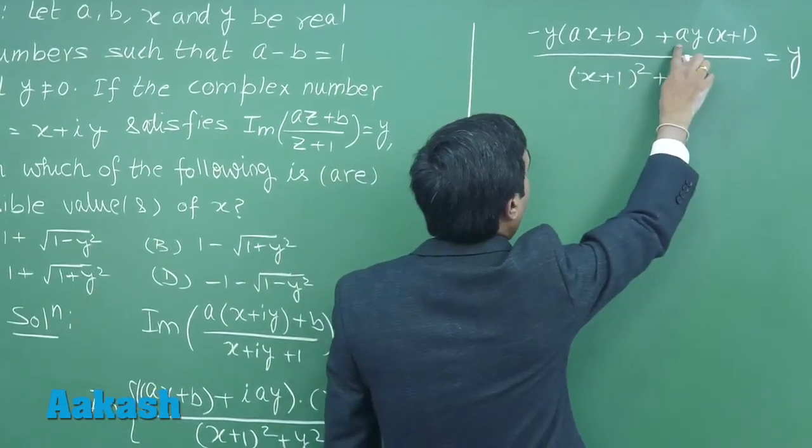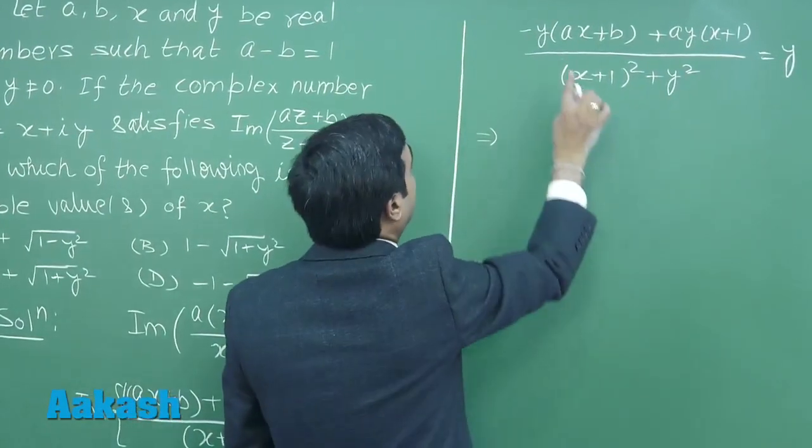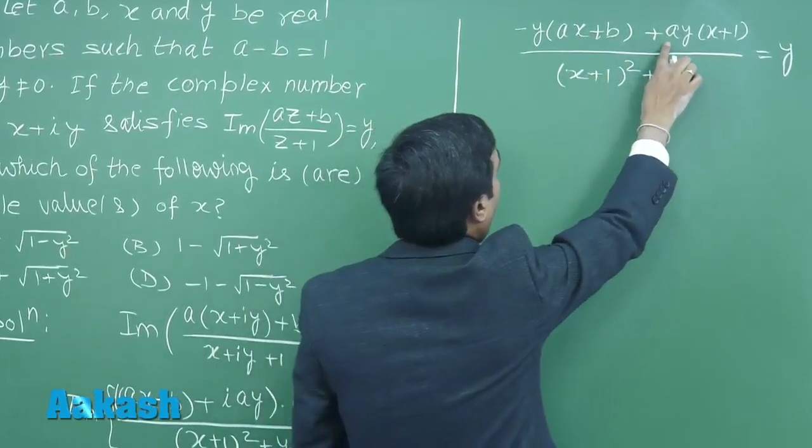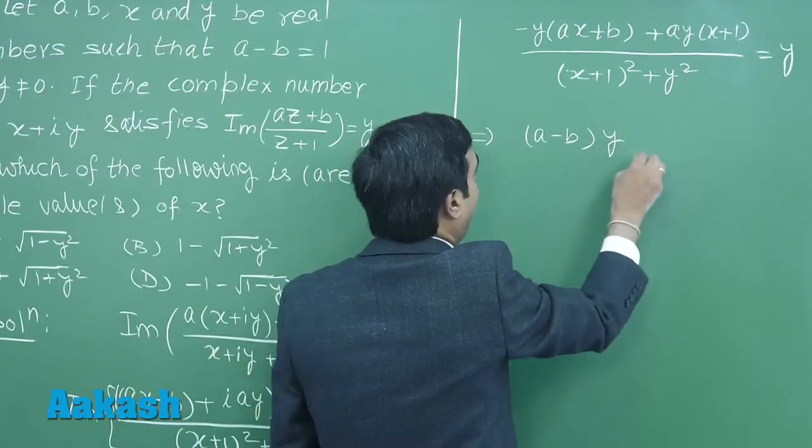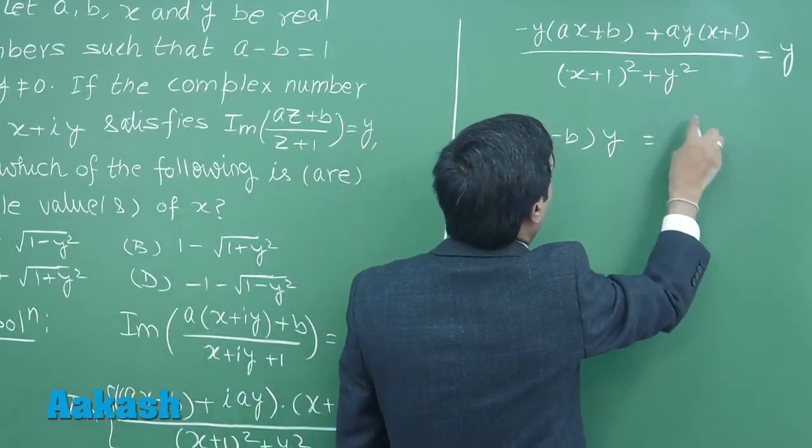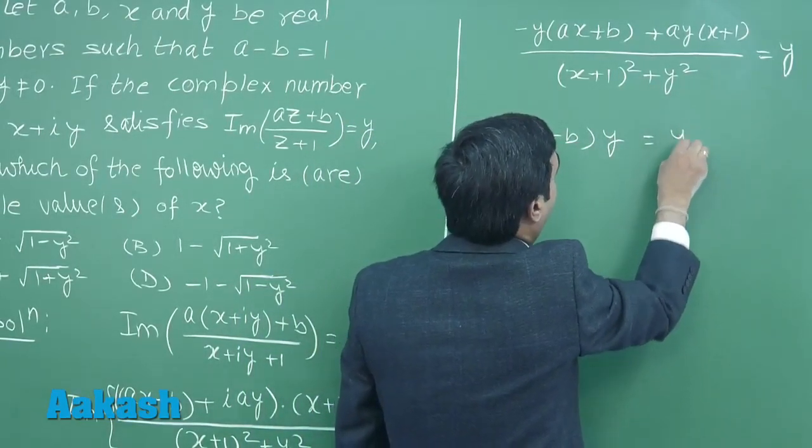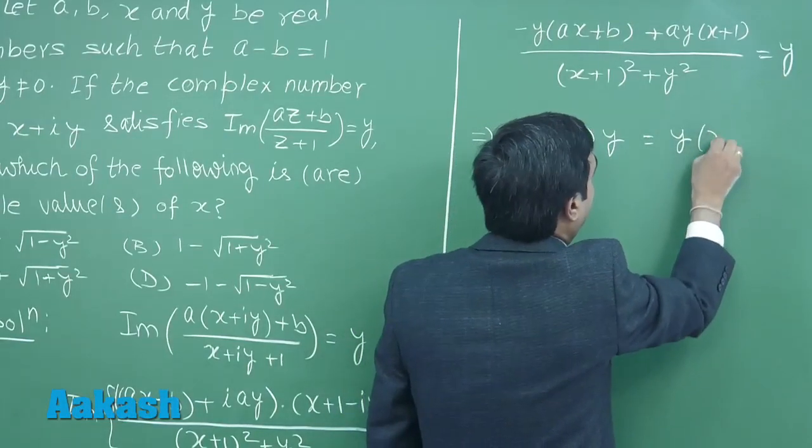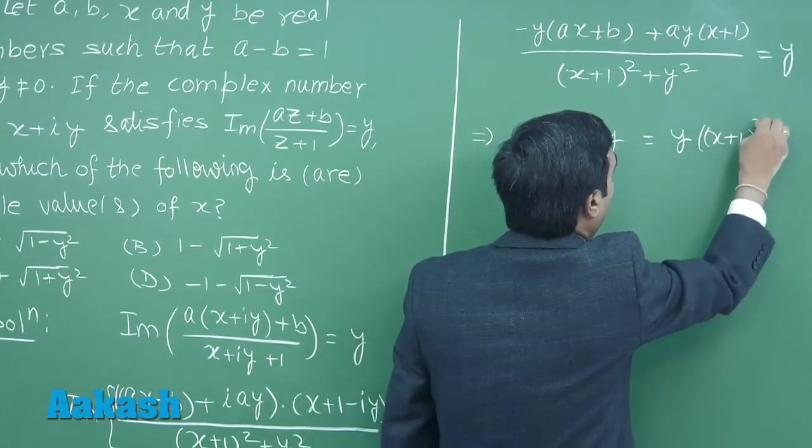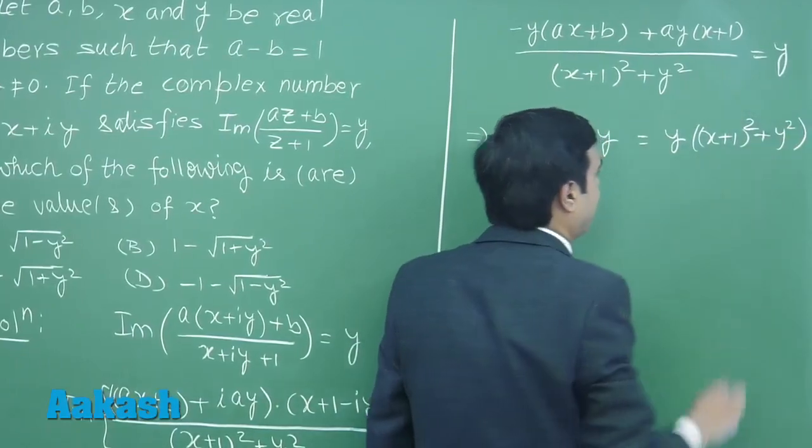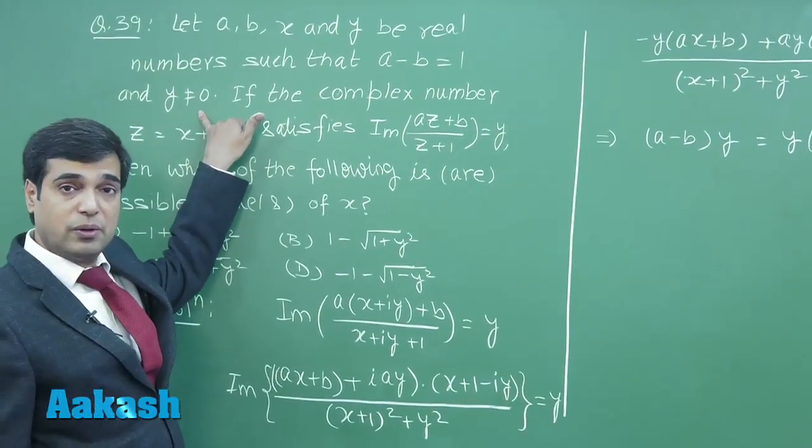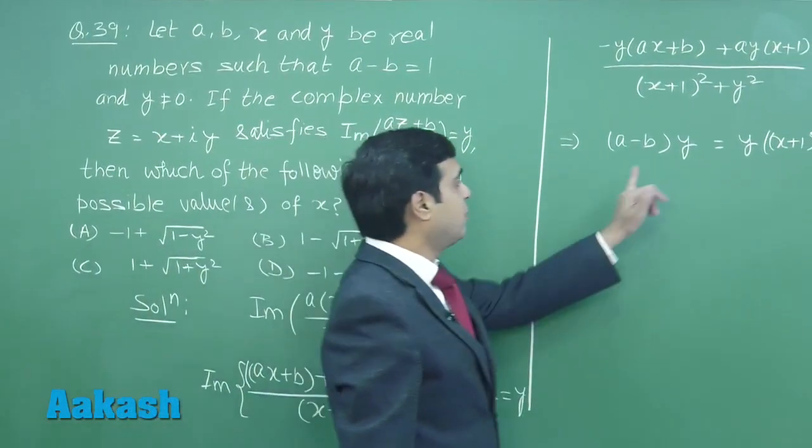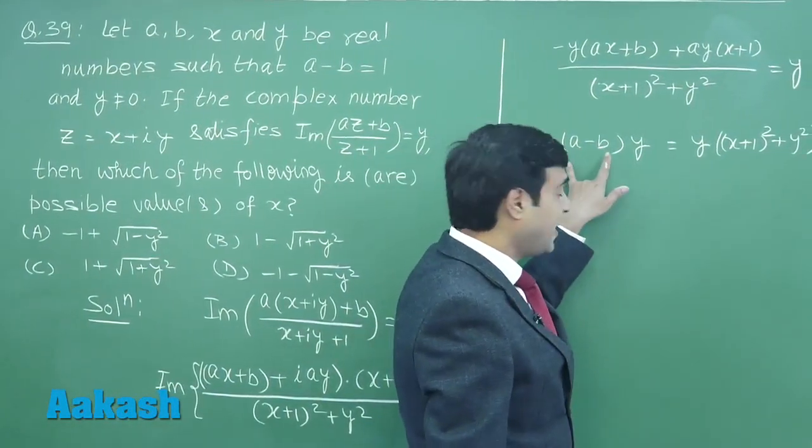This gives us y minus ax. Terms cancel out: we get minus axy plus axy cancelled out, minus by plus ay. That is a minus b into y equals x multiplied by (x plus 1) whole square plus y square. Now since it is given in the question that y is non-zero, we can simply cancel y on each side.